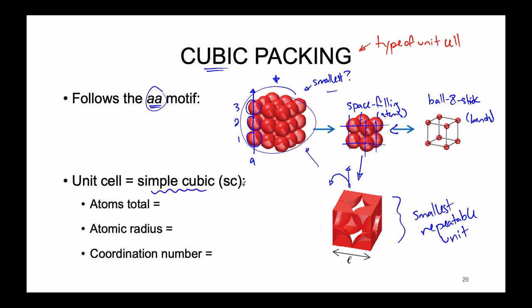This unit cell is labeled the simple cubic, or SC, unit cell — representing the cubic packing pattern. So 'simple cubic' refers to the unit cell, while 'cubic packing' refers to the overall large-scale pattern. Using these two terms interchangeably is totally fine. Now let's inspect our unit cell. We're going to count how many atoms total are present inside of it. Notice we have cut our atoms up — we no longer have whole atoms in each corner. So the question is: what fraction of the atom do we have in each corner space?